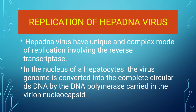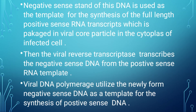Replication of Hepatitis B virus. Hepatitis B has a unique and complex mode of replication involving reverse transcriptase. In the nucleus of the infected cell, the virus genome is converted into complete circular double-stranded DNA by the DNA polymerase carried in the virion nucleocapsid. The negative-sense strand of this DNA is used as a template for synthesis of full-length positive-sense RNA transcript, which is packaged in the viral core particle in the cytoplasm of the infected cell.